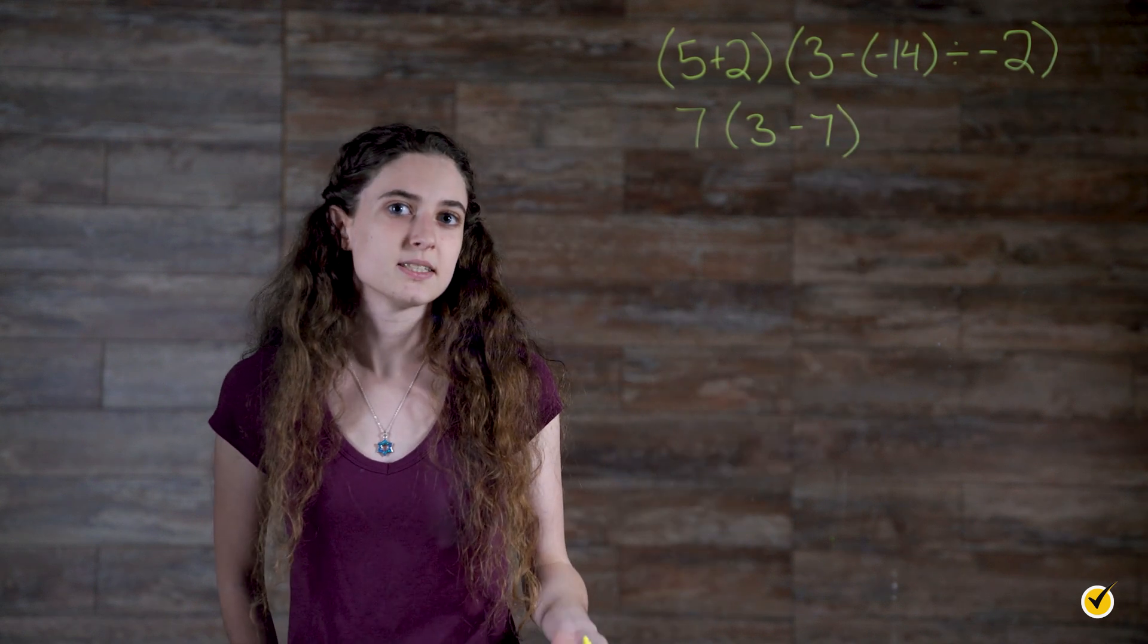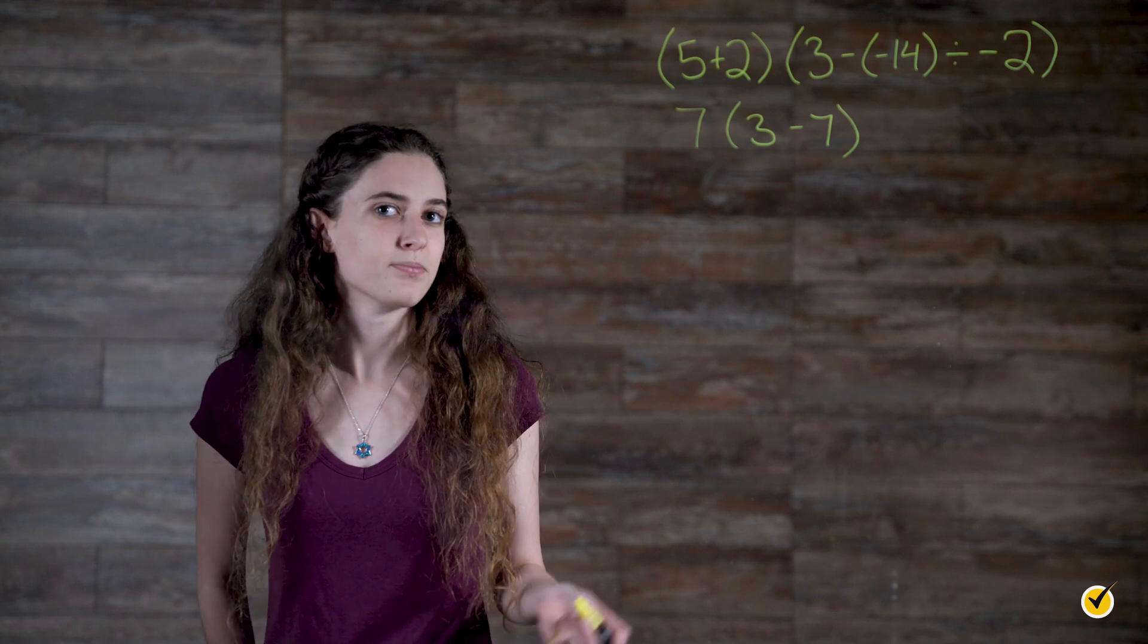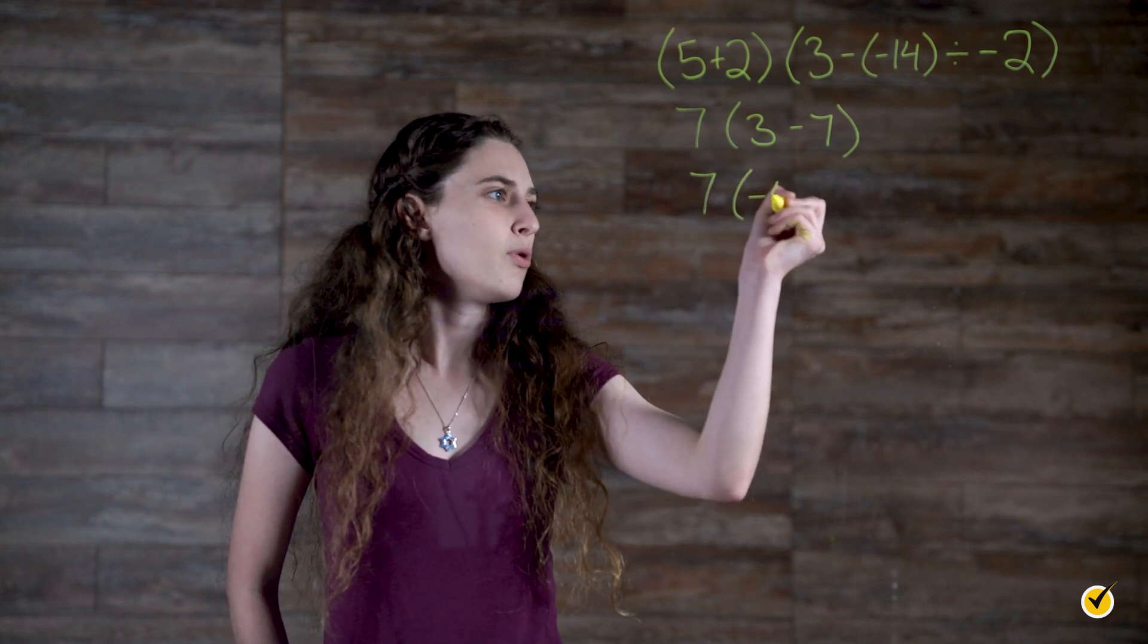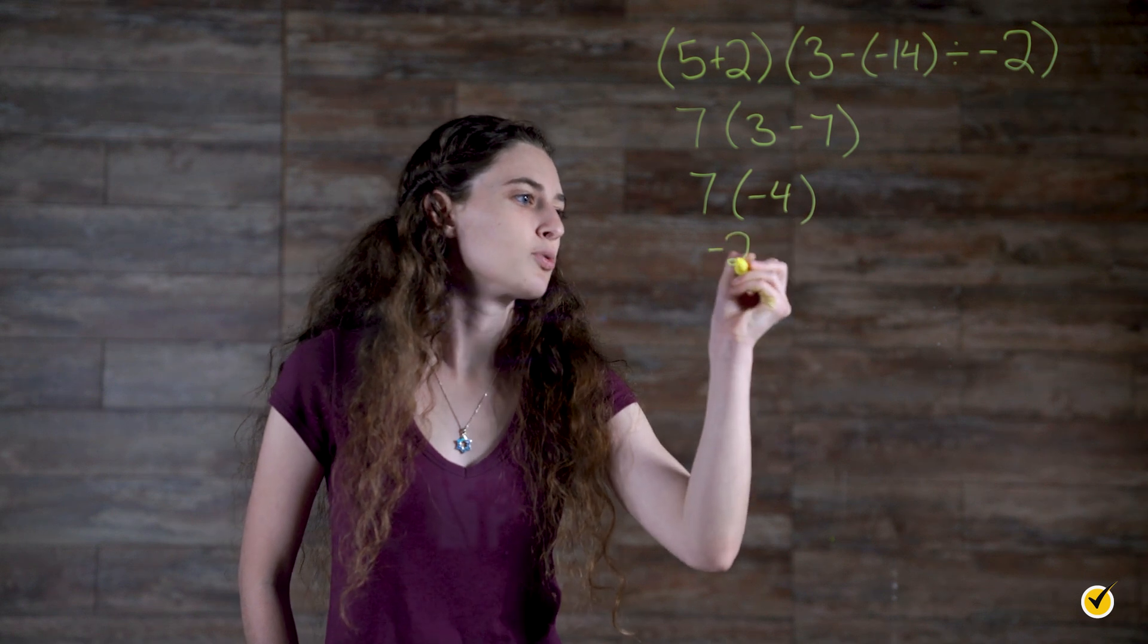The final set of parentheses simplifies quickly to negative 4. And then multiplying 7 by negative 4 gives us negative 28.